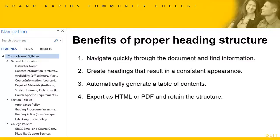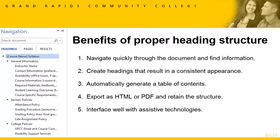A Word file can be exported as HTML or PDF files and retain the structure. HTML — hypertext markup language — is the most accessible type of online content as it does not require additional software to view and can be easily navigated by screen readers. PDF is Adobe's portable document format, widely used on the web and for course content. A document with proper heading structure interfaces well with assistive technologies such as screen readers.